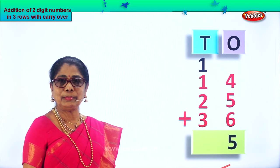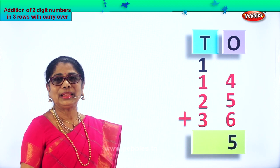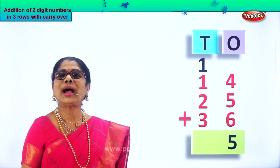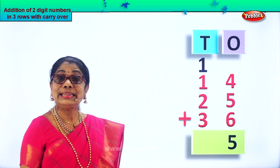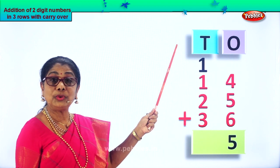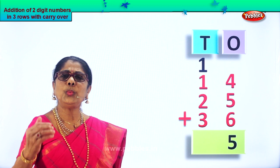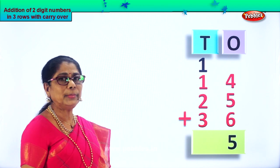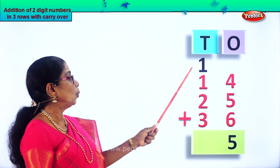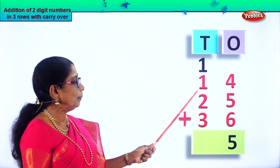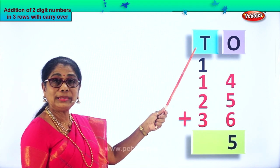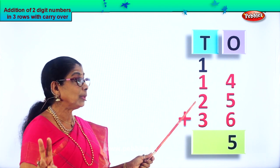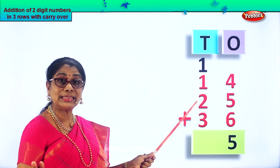Only up to nine numbers we can put in the ones place. So we carry over one ten to the tens place. Now we add all the numbers in the tens place. One plus one plus two plus three: one ten plus one ten equals two tens.